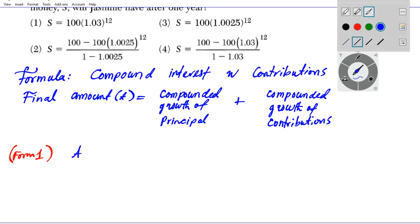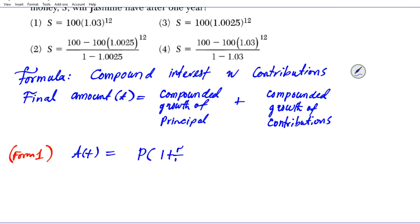Form 1 is: A(t) equals the compounded growth of the principal, which is P times (1 + r/n)^(nt). If you just put a particular amount of money in a savings account without making any contributions and the interest is compounded n times per year, this formula will suffice.